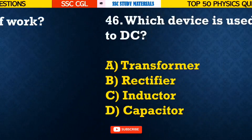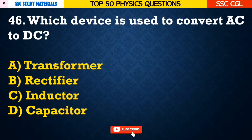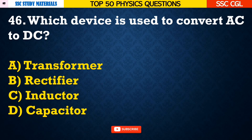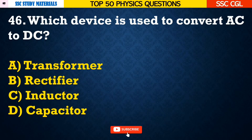Question number 46: Which device is used to convert AC to DC? — Answer B. Rectifier.